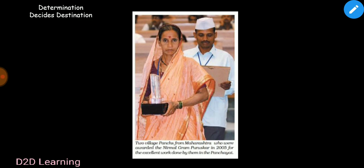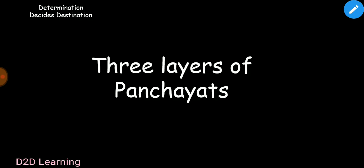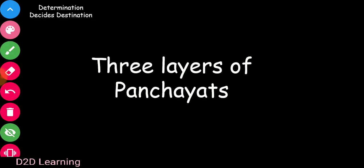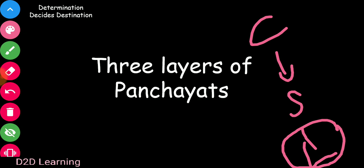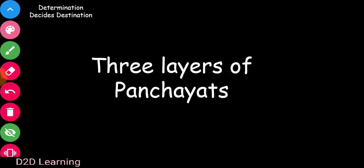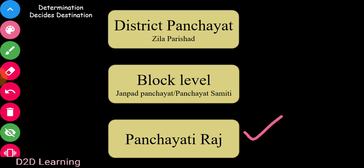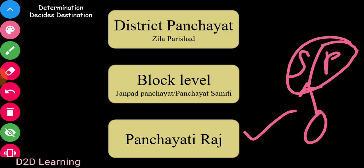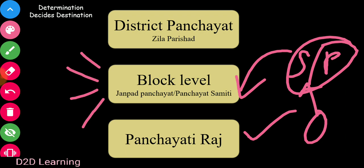There are three layers of Panchayat. We already have three layers of government: national level, central level, state level, and local level. Now our focus is the local level. Local level is the first tier of the system — that is the grassroots or the base. This is the third level of government. The base level is the Gram Panchayat. This is the Secretary, and this is the block level.